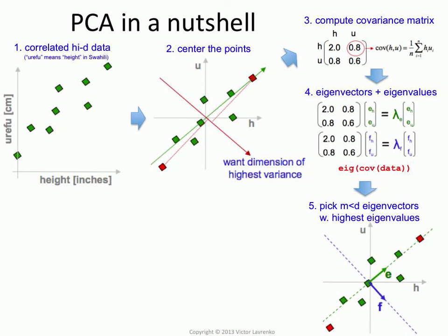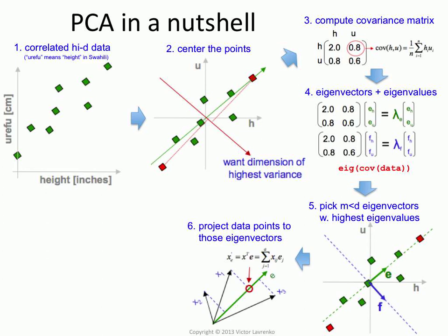We end up with d eigenvectors. We don't want all of them. We pick m based on the percentage of the variance you want to capture.